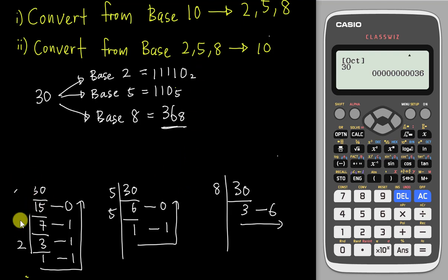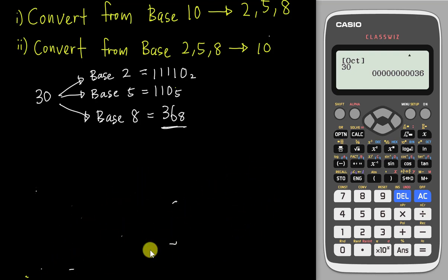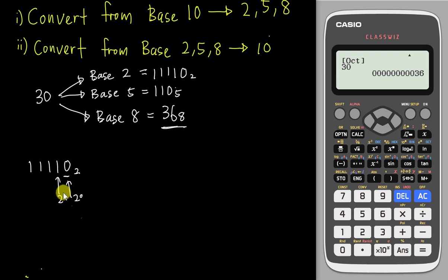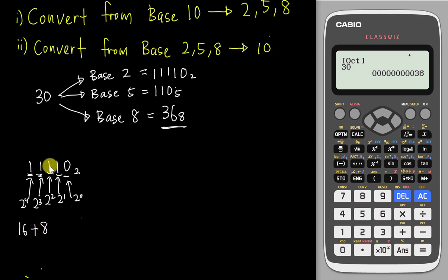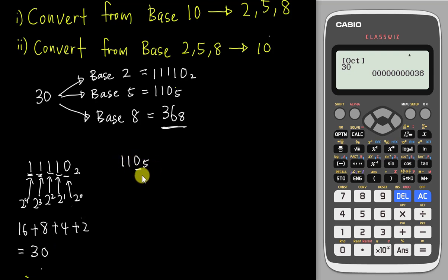Now, what if I want to convert back into base 10? Let's take 11110 base 2 and change it back. The last digit is 2 to the power 0, then 2¹, 2², 2³, 2⁴. So: 1×2⁴=16, plus 1×2³=8, plus 1×2²=4, plus 1×2¹=2, plus 0×2⁰=0. Adding them all gives 30.